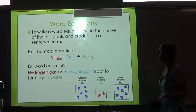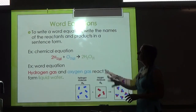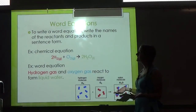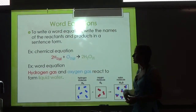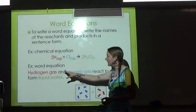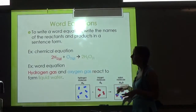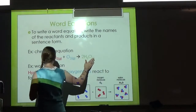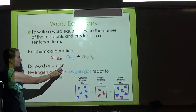The first thing we're going to talk about are called word equations. To write a word equation, you just write the names of the reactants and products in a sentence form. I've tried to color-code everything so you can follow along. Here's the chemical equation, and then here would be the word equation.